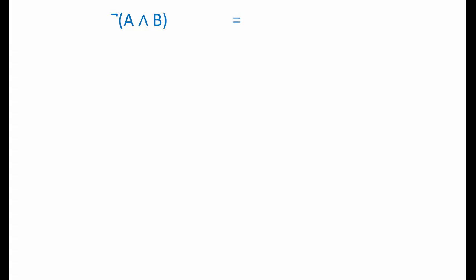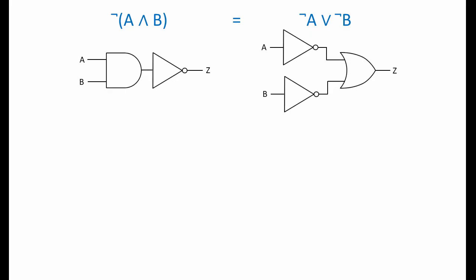De Morgan's theorem states that this term is equivalent to this term, or to put it another way, that this circuit is equivalent to this one. Both circuits behave in the same way. Their behaviours can be described with exactly the same truth table.